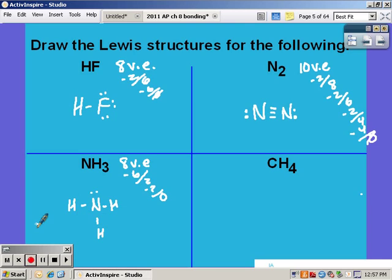So NH3 has one lone pair and three bonding pairs of electrons. For CH4 it also has eight valence electrons and we do not need any lone pairs because it's satisfied with just the hydrogens coming off of it.